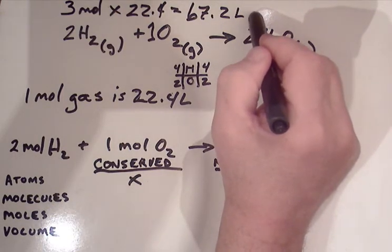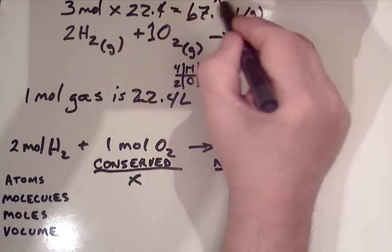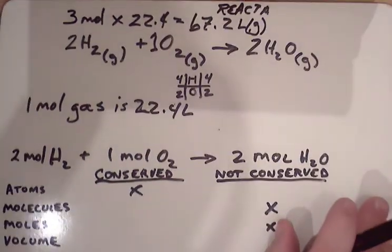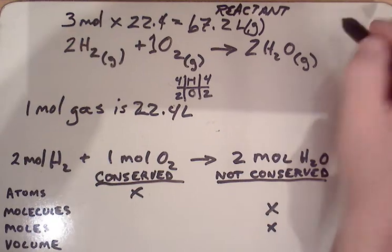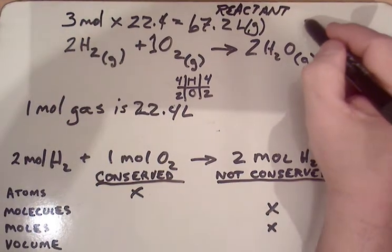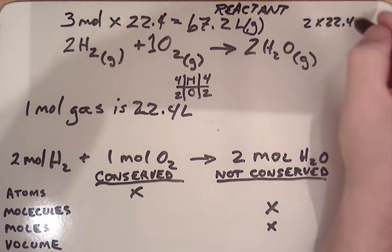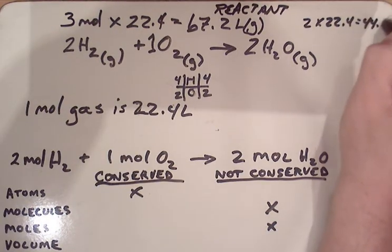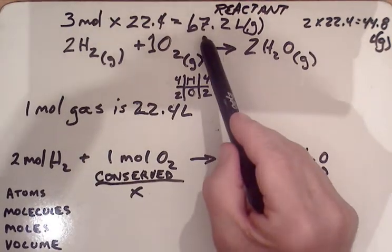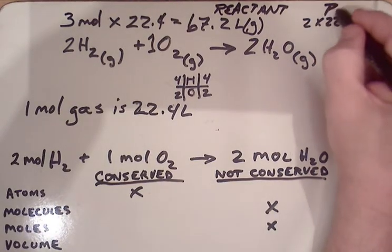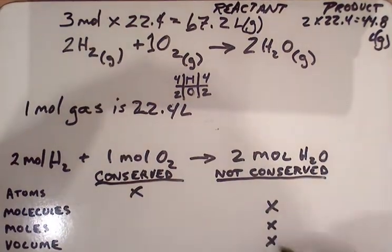And we have 2 moles of gas on the product side. So 2 times 22.4 equals 44.8 liters of gas. So 67.2 does not equal 44.8. And so volume is not conserved.